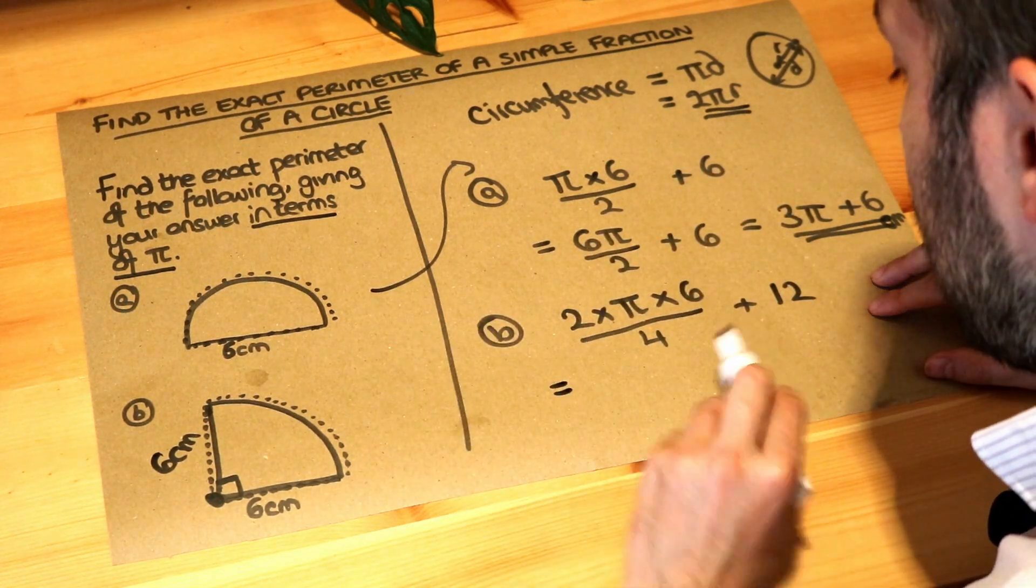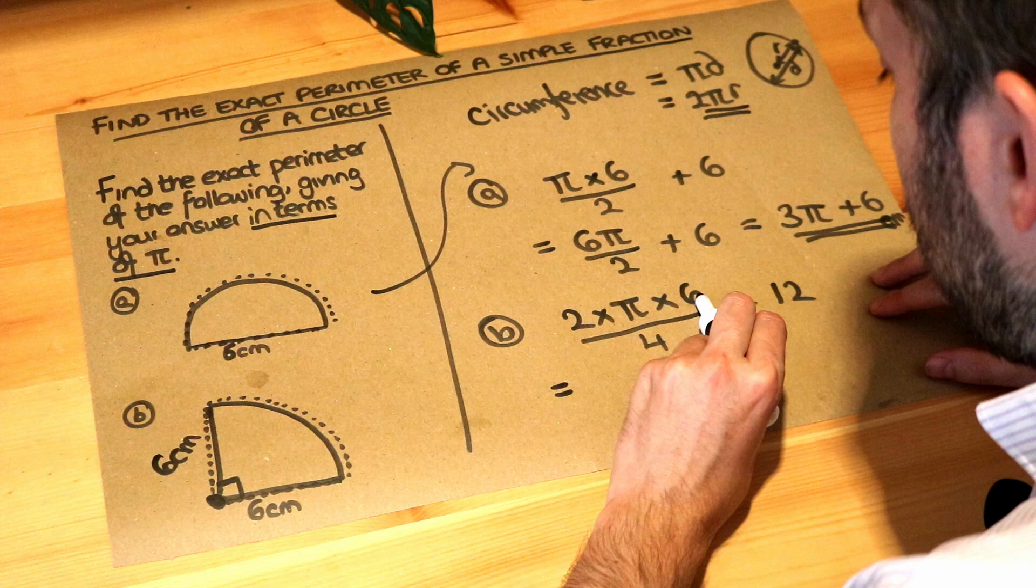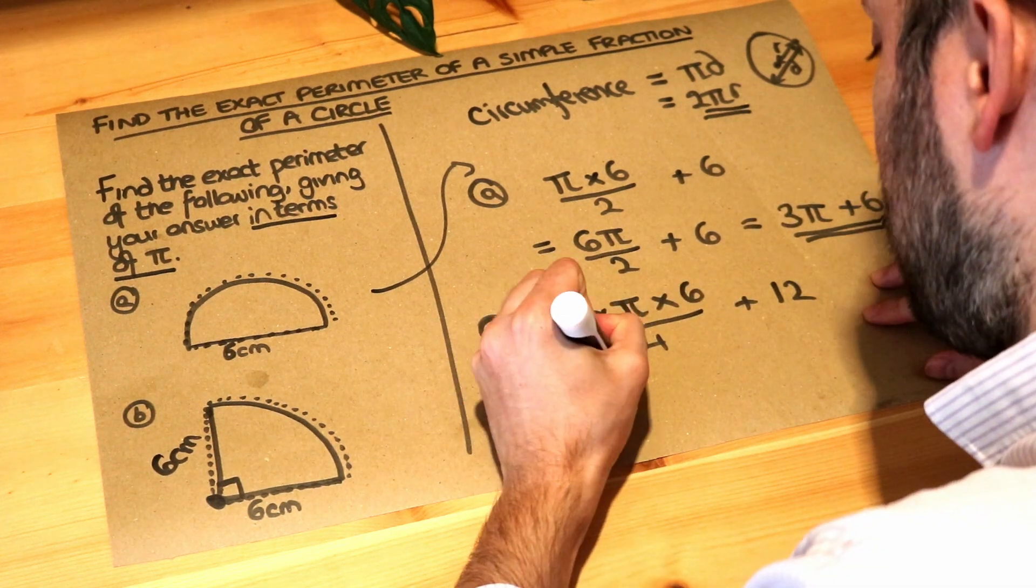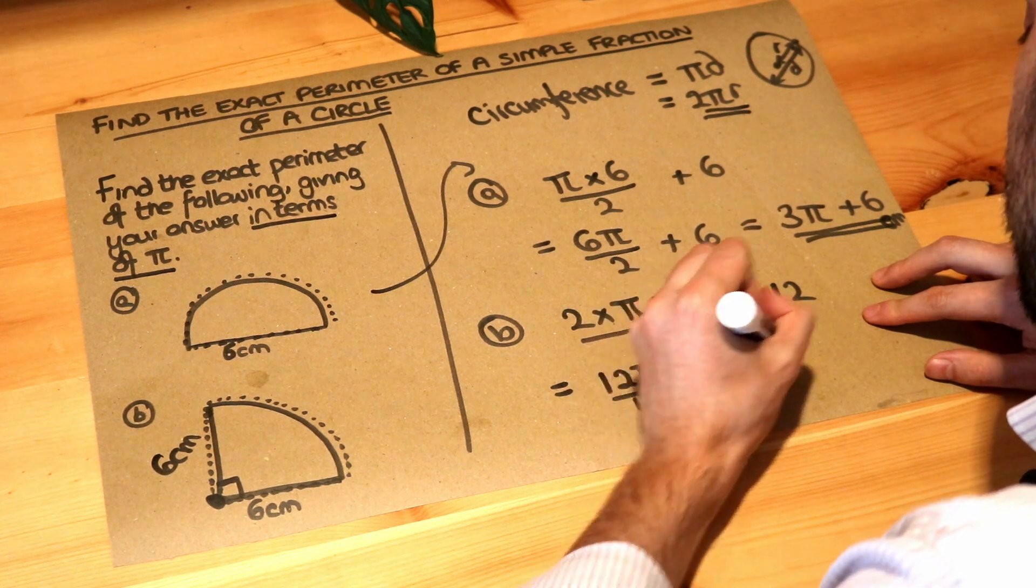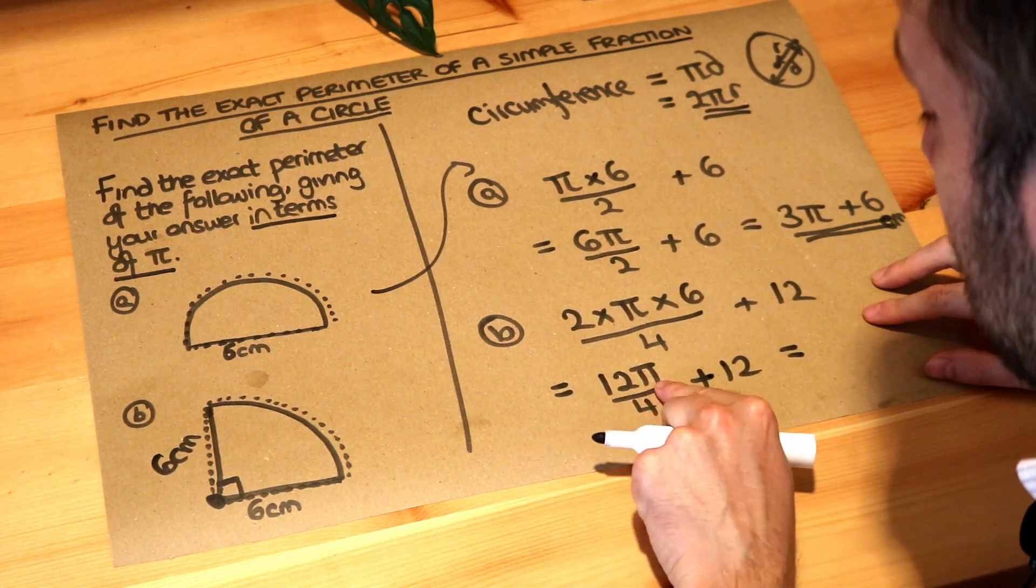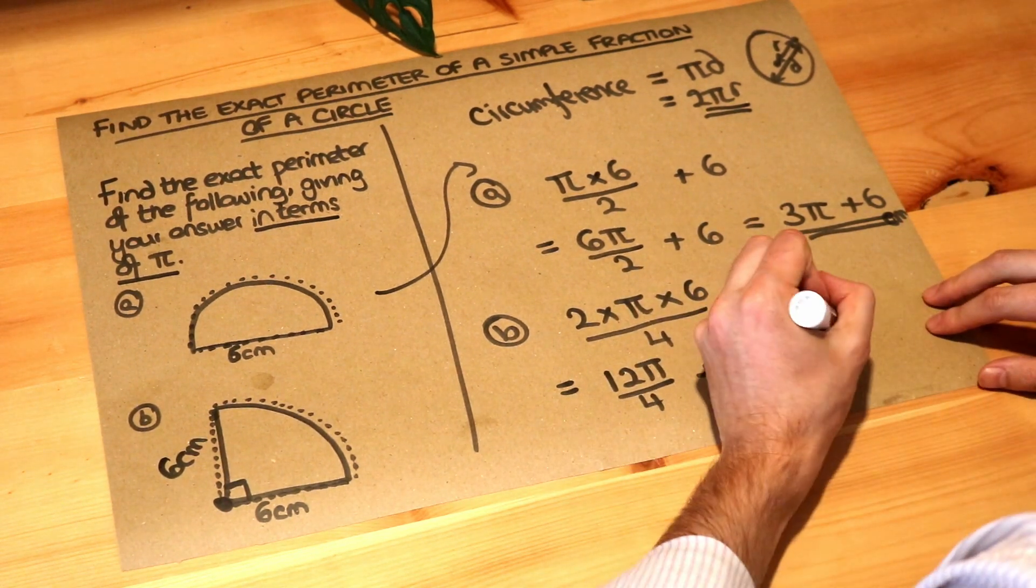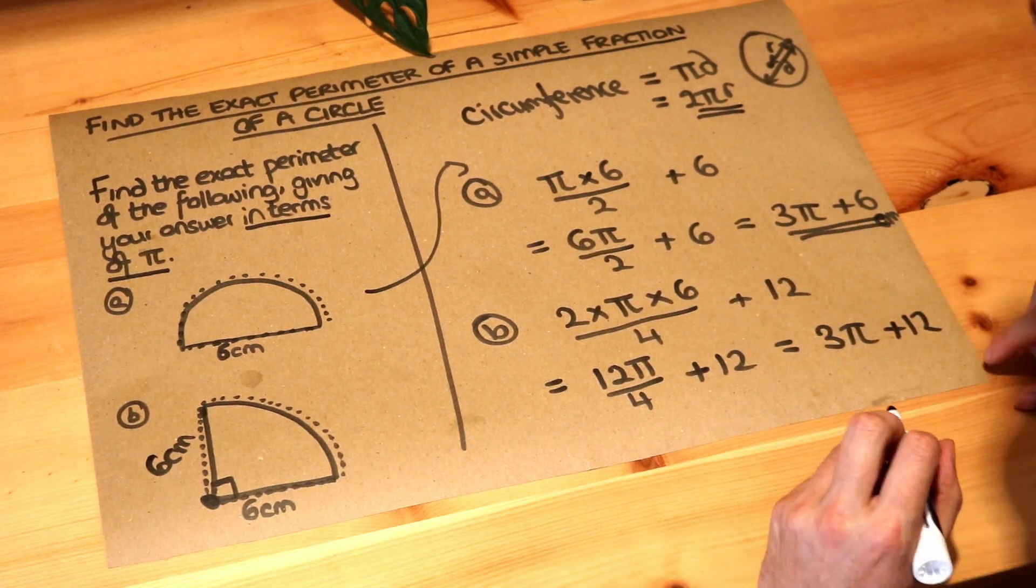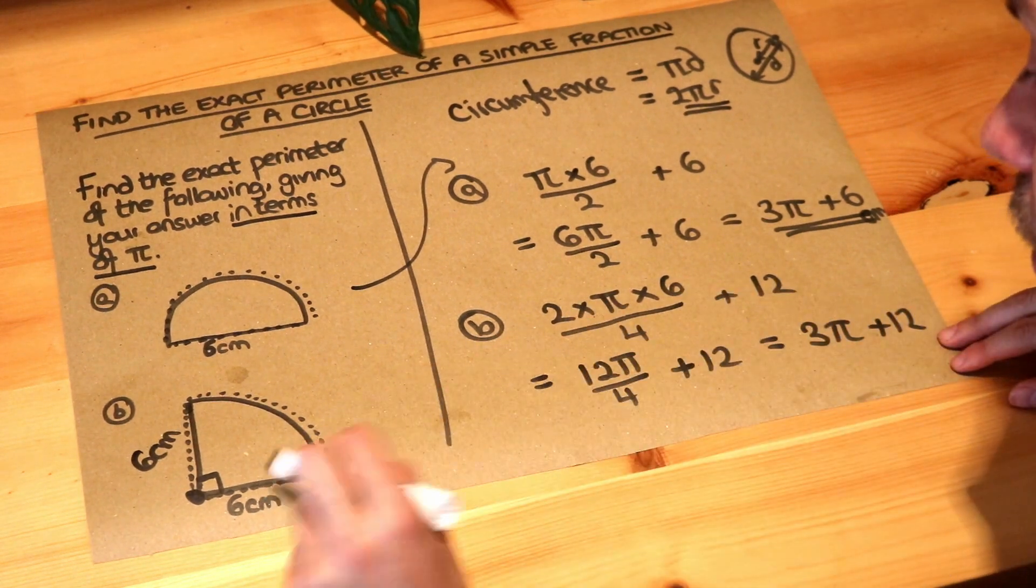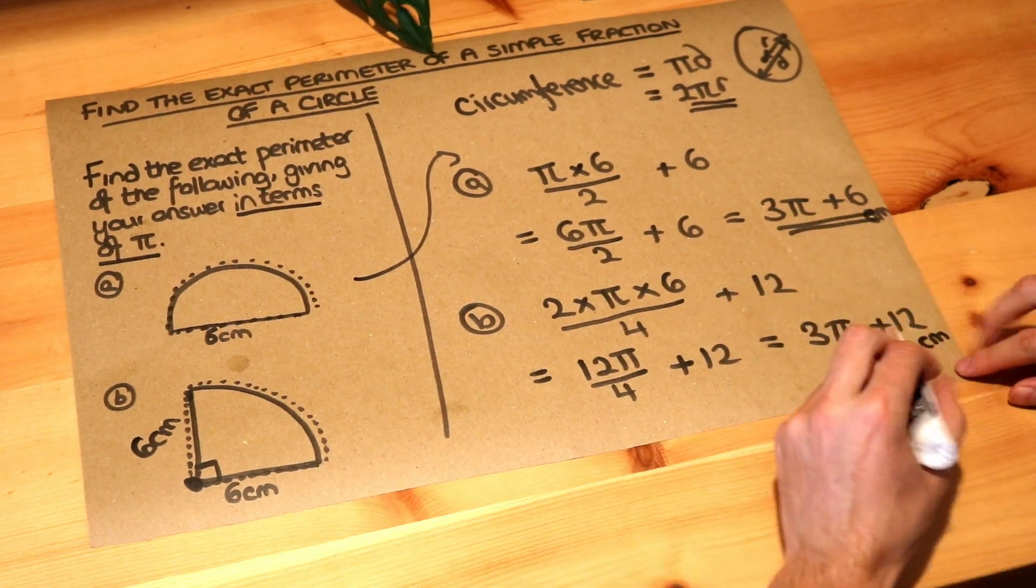Let's simplify this again. 2 times 6 is 12. 12 times pi is 12 pi. So we've got 12 pi divided by 4 plus 12. Now, if we have 12 lots of pi and we divide it by 4, we've got 3 lots of pi. And we've still got that plus 12. Again, we can't simplify that any further. And we should put the unit of centimetres on the end. And that is the final answer.